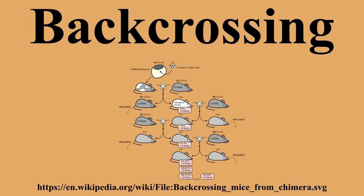Back-crossing is a crossing of a hybrid with one of its parents or an individual genetically similar to its parent, in order to achieve offspring with a genetic identity which is closer to that of the parent. It is used in horticulture, animal breeding, and in the production of gene knockout organisms. Back-crossed hybrids are sometimes described with the acronym BC.